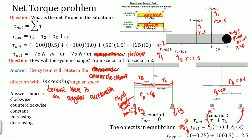Please remember this is the convention: clockwise torque is negative, counterclockwise torque is positive. You could define it however you want — this is the basic default convention. That is everything about torque that you need to know.